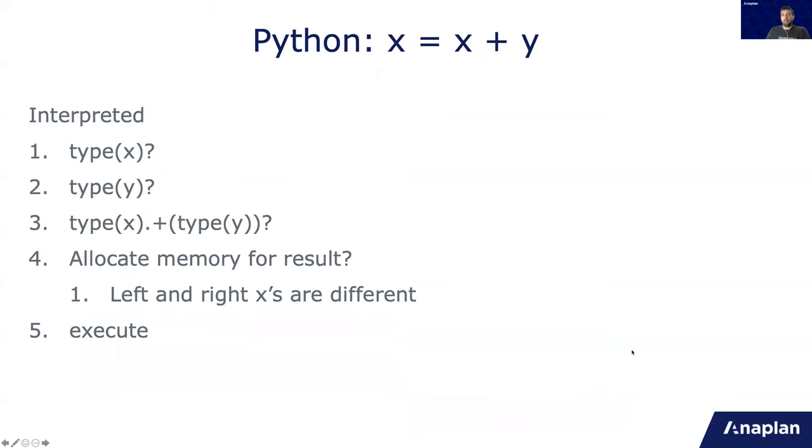So first, basic Python. When you do in Python, x equals x plus y, Python is interpreted. So everything happens in real time. Nothing is calculated before you run the equation. So first it needs to know what is the type of x, then it needs to know what is the type of y, then how y is acting on x. Because if, for example, if x is a float and y is a Boolean, it might not work as if x is a float.